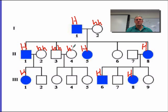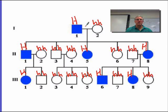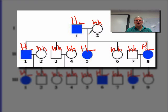Let's go around and fill in every person that does not have the disorder — they have to be little h, little h, because if they had a big H they would have the disorder. So we already have a whole bunch of information just knowing this is a dominant transmitted disorder. How can we figure out the blanks? Sometimes you can and sometimes you can't. To figure out the blanks, we're going to have to look at the kids.